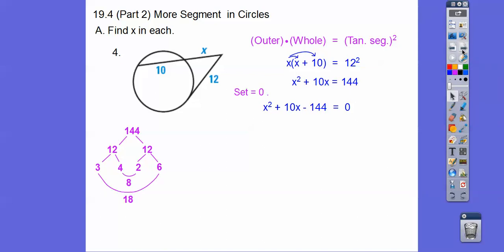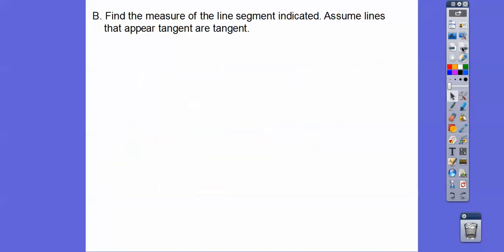So 144 is also equal to 18 times 8. Now we factor, set the factors equal to 0, and then here we're going to go minus 18, plus 8, so we get negative 18 or 8. We're talking length, so we can disregard the negative 18, so x equals 8.